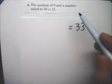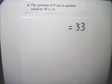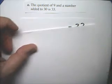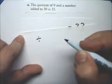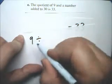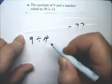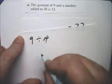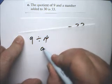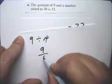The quotient of 9 and a number. Quotient is the answer to a division problem. Here's the quotient of 9 and a number. And in algebra, we would usually write this as 9 over x.